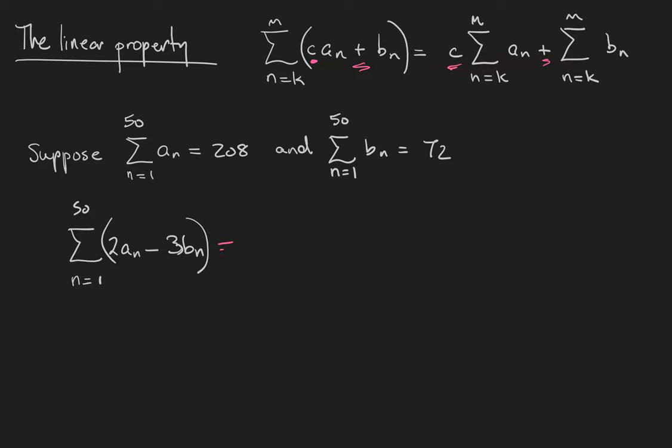Well, we can exploit the linear property to separate the sum over the difference and pull out the constant multiples. This becomes 2 times the sum from 1 to 50 of the a_n's minus 3 times the sum from 1 to 50 of the b_n's.